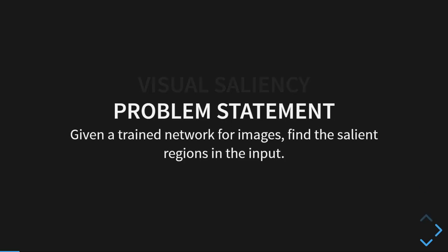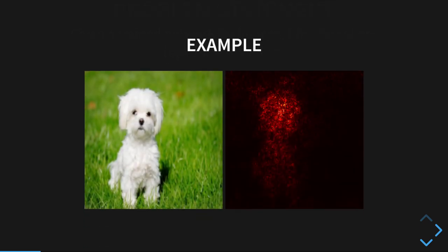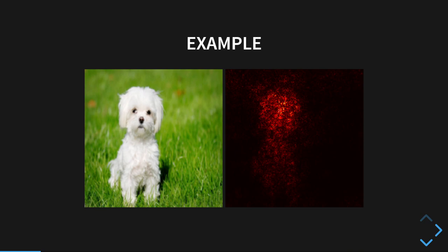So that is the problem of visual saliency. Given a trained network for images, we want to find out the salient regions in the input. Here is an example of this. Here we can see in the form of a heat map that the model is focusing more on the dog and less on the grass in order to make its classification.